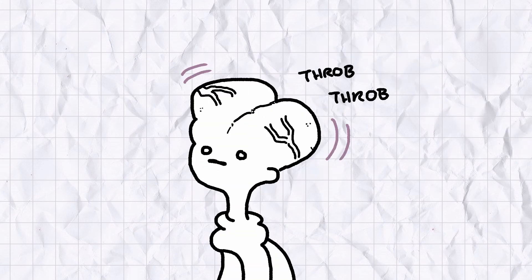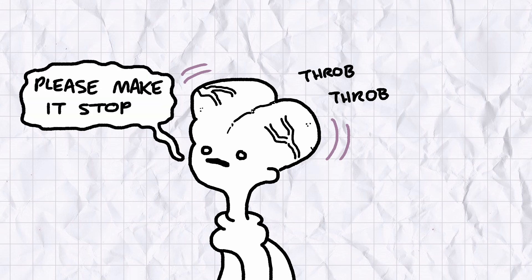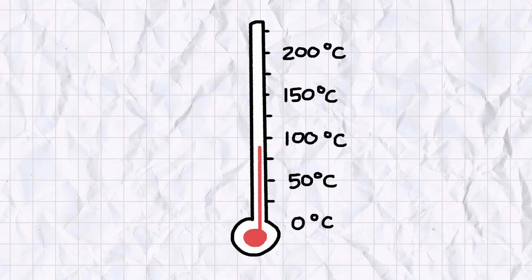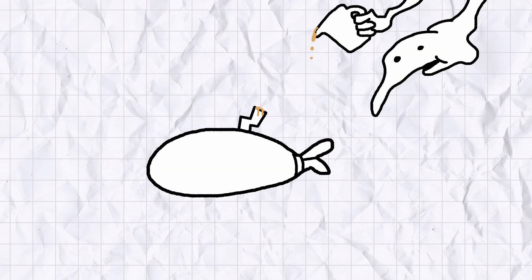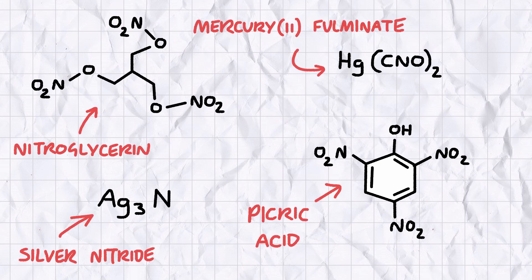Now, the gigabrained memory wizards among you may recall I said TNT could be melted without exploding. This is because TNT's melting point is way lower than the point at which it will spontaneously detonate. As a liquid, it can be poured into shell casings, or mixed with other explosives, many of which are also nitrogen compounds.